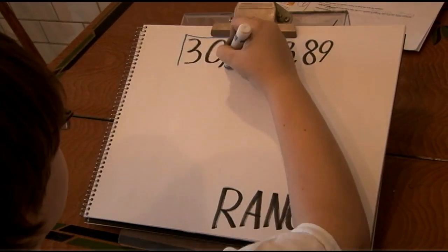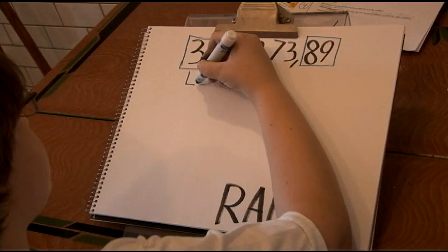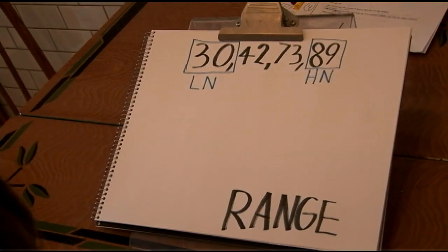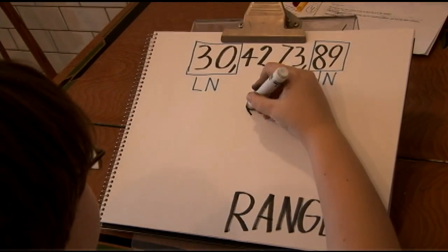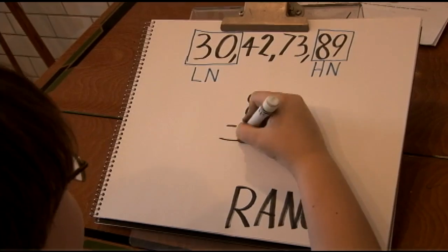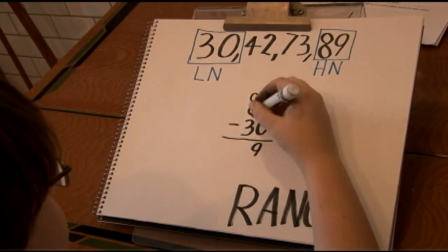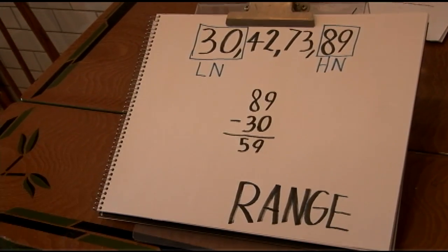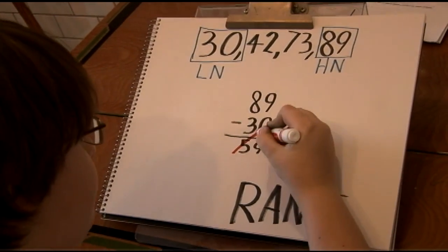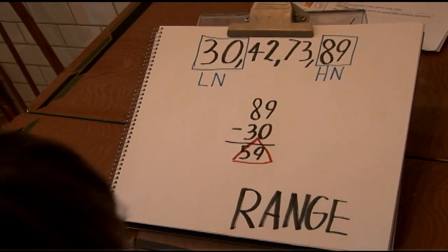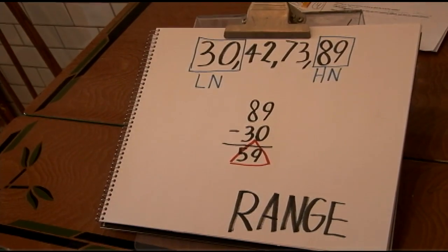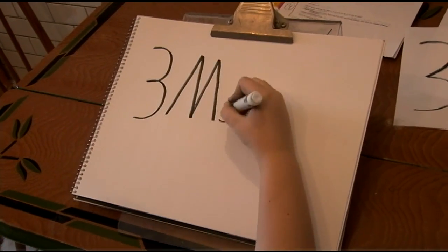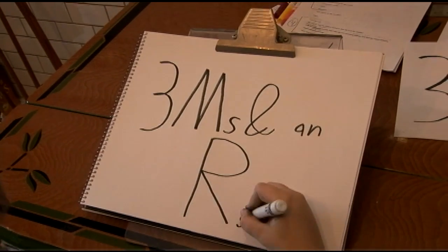The way to find the range is to find the highest number and the lowest number. The answer is expressed as: highest number minus lowest number equals range. This is the three M's and an R.